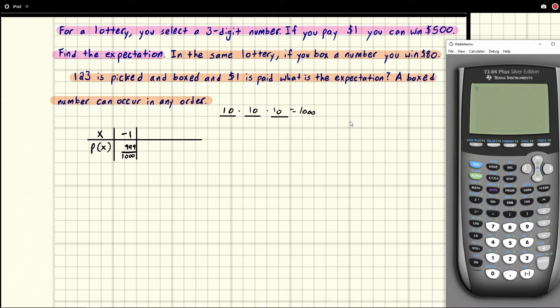Next, we're going to do the winning. So if you win, you win $500. But you paid $1. So you really win $499. And with that $499, you have a one out of 1000 chance of winning. There were 1000 numbers. So that means there's only one of them that can do it.